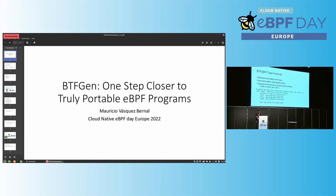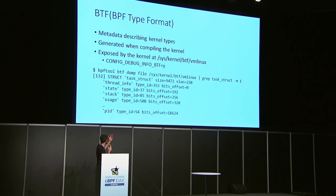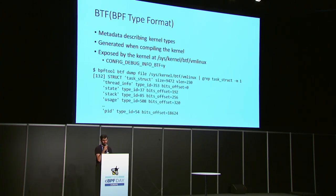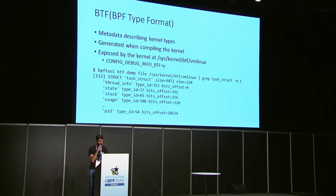BTF is a metadata type that describes the different kernel types. It is generated when we compile the kernel and exposed by the kernel when the relevant compilation flag is enabled. As a small example, using the task structure shown earlier: we have information about the task structure, the size of the structure, and all its members. At the bottom, we can see a PID member with its offset — this is the actual information the loader library uses to perform relocation of the program.